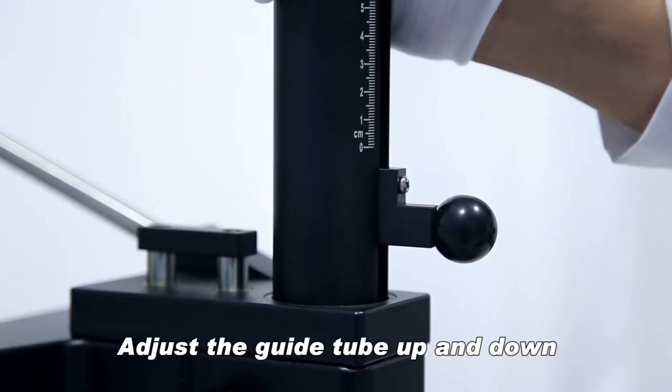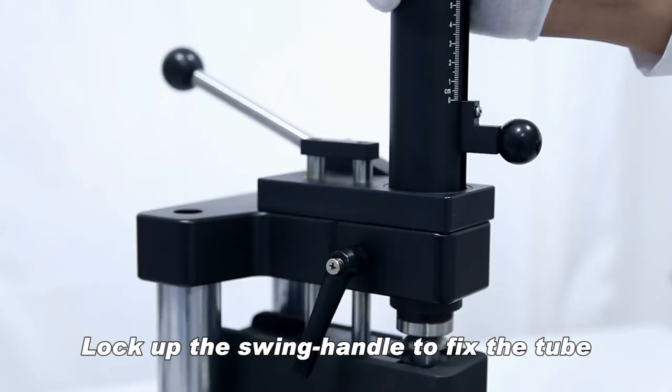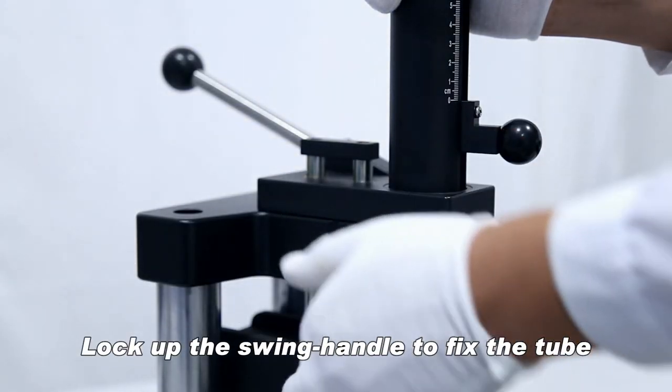Adjust the guide tube up and down to ensure the top of the weight handle is at the zero mark of the tube. Lock up the swing handle to fix the tube.